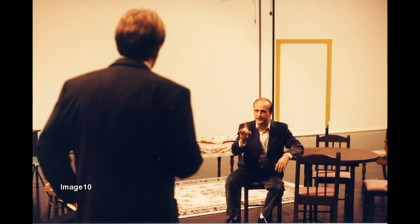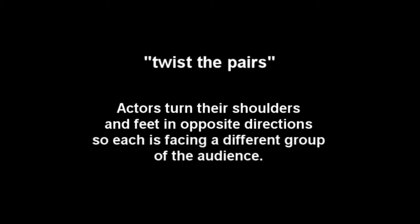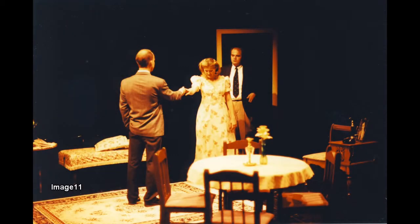When two actors are sharing the stage on an arena space, they can't create an imaginary triangle on the floor like actors of a proscenium arch space do — this would have the effect of actors standing at center stage with their back to half the audience. Instead, actors on the arena stage move their feet in a position referred to as 'twist the pairs.' They turn so that one actor is facing one side of the audience and the other actor is facing the other half, so that even if the audience is looking at the back of one actor, they are still looking at the front of the other actor.